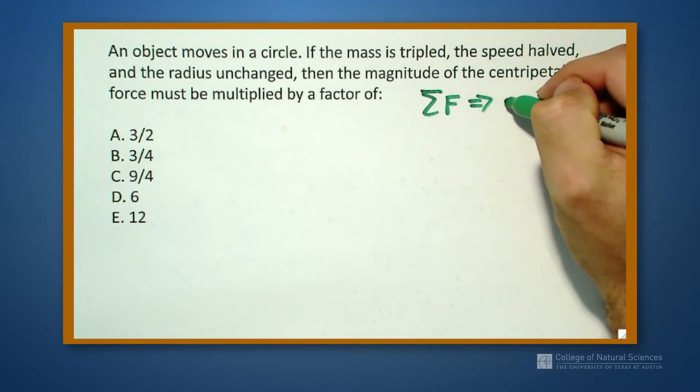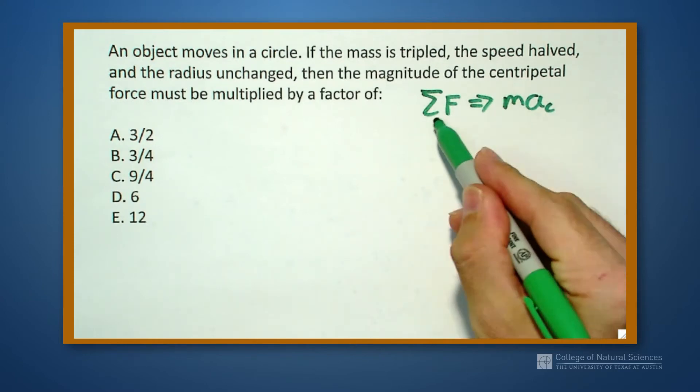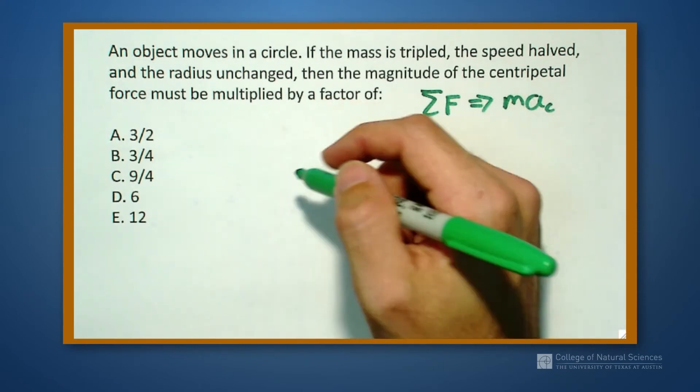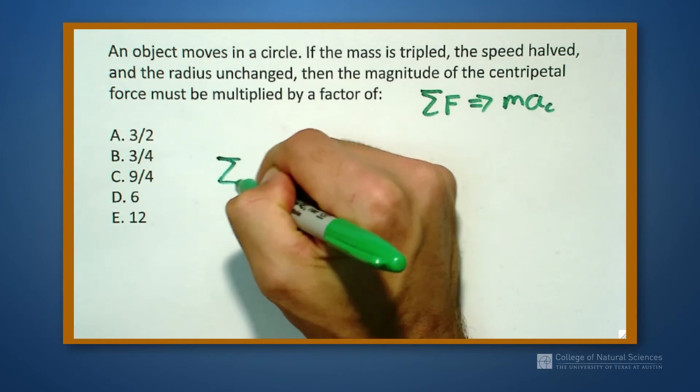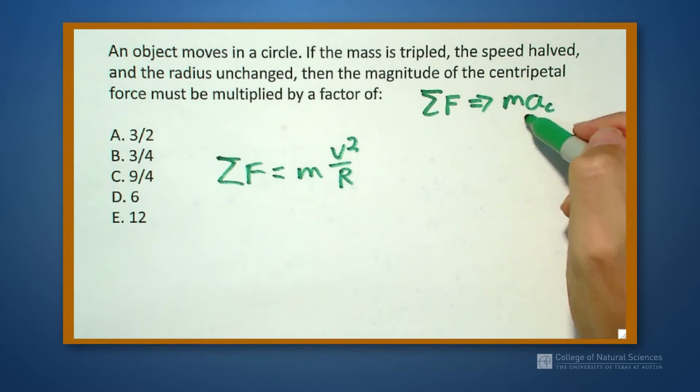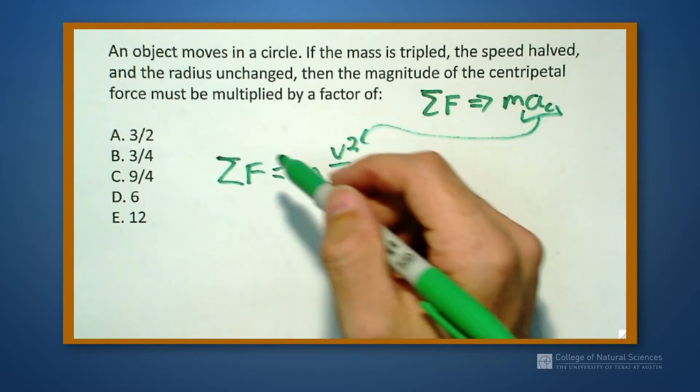So it provides a centripetal acceleration of Ac. When we say centripetal force, we mean the force that provides a centripetal acceleration, or the net force that provides a centripetal acceleration. So I know that sigma F is equal to m v squared over r. This is just my definition of centripetal acceleration. It has a very specific form.